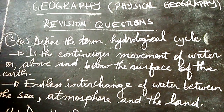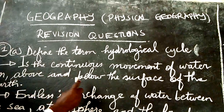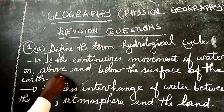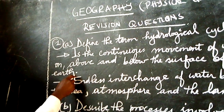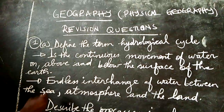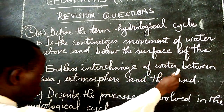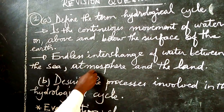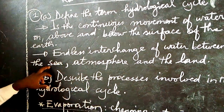Definition one: the hydrological cycle is the continuous movement of water on, above and below the surface of the earth. We have also another definition: it is the endless interchange of water between the sea, the atmosphere and the land — not only the sea, but also any other kind of water body.